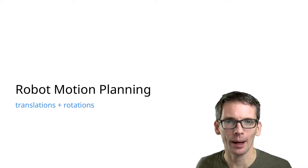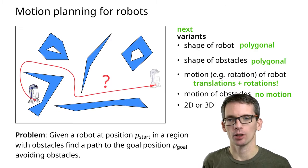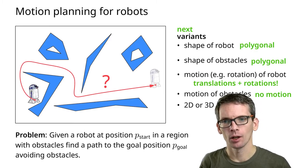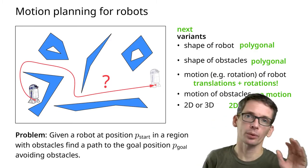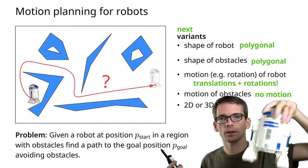Next, let's look at what happens if our robot can translate and rotate. Here's the setting: we still have a polygonal robot and polygonal obstacles. The robot now can translate and rotate.